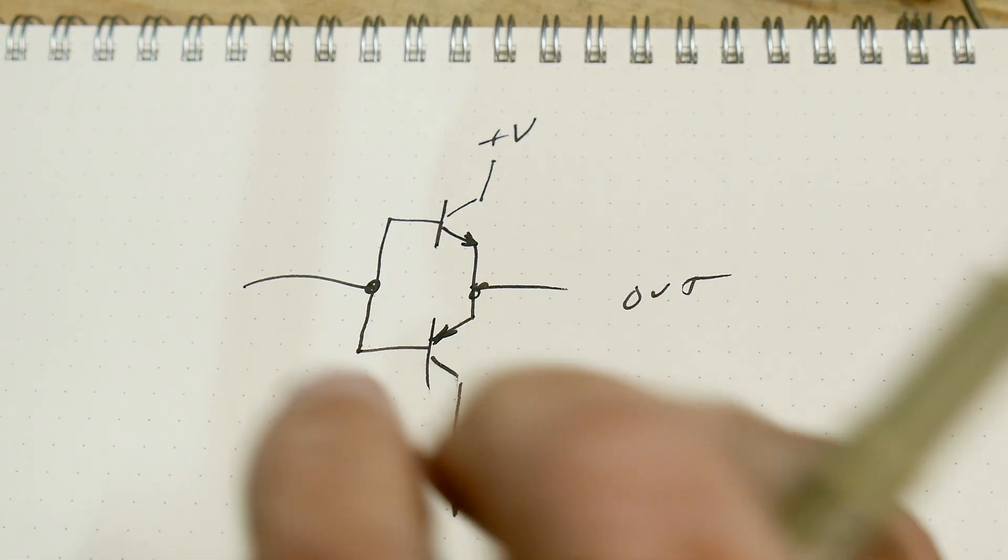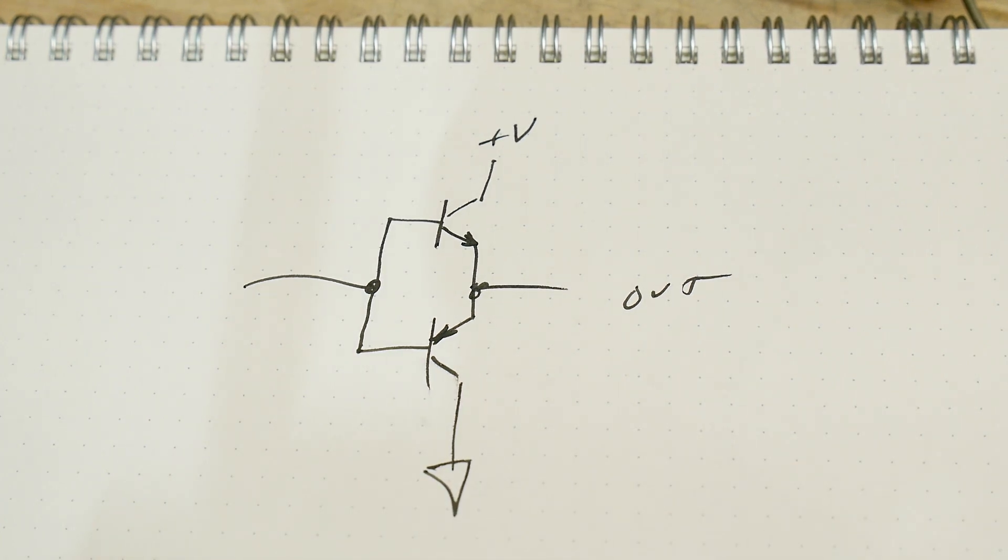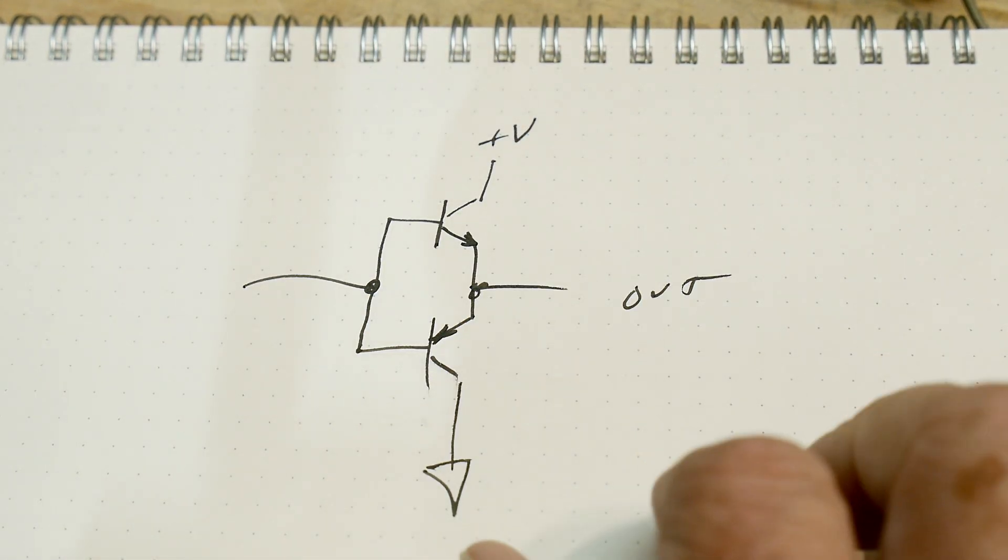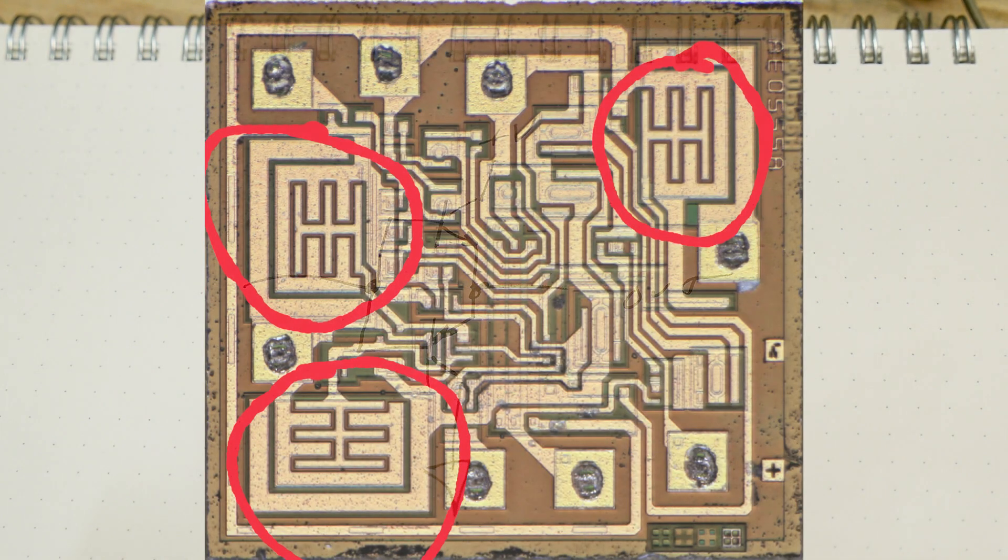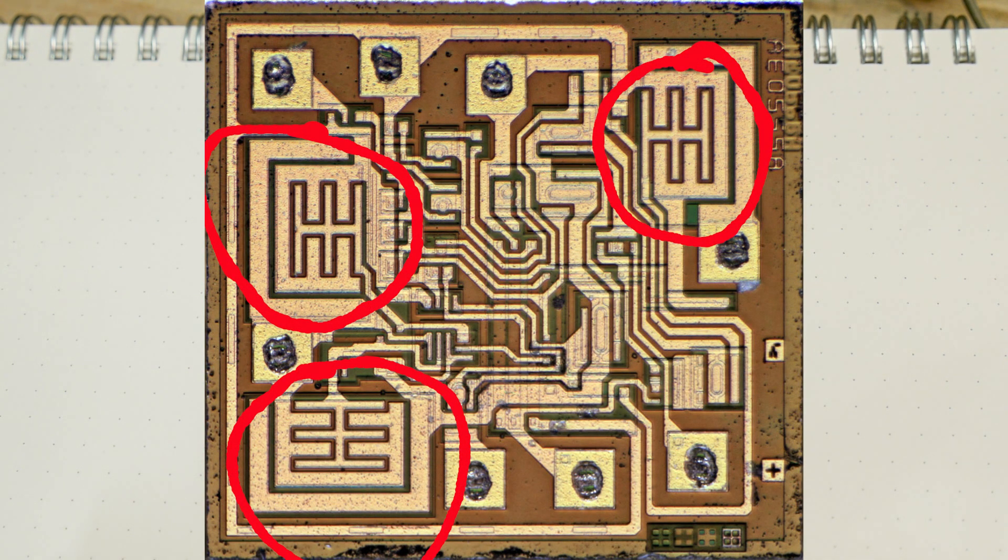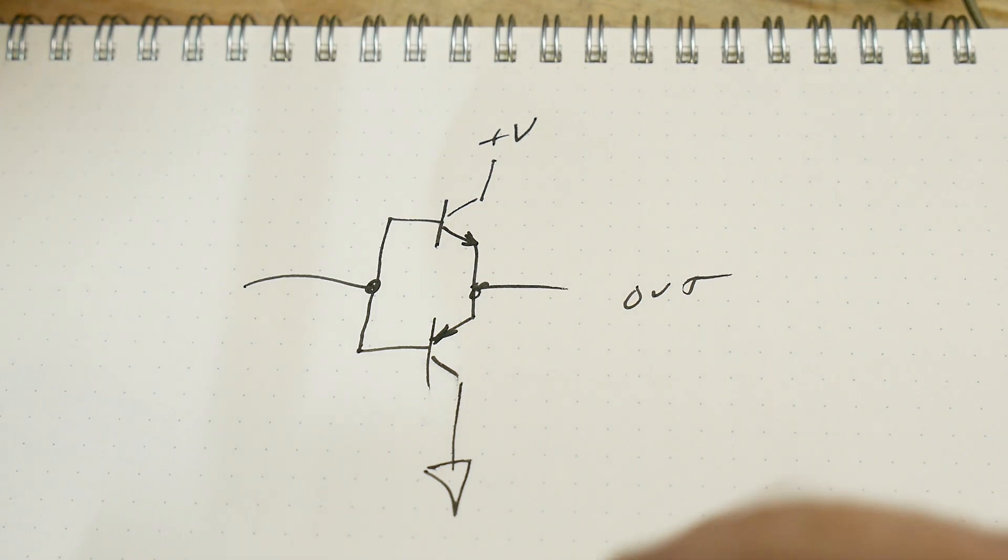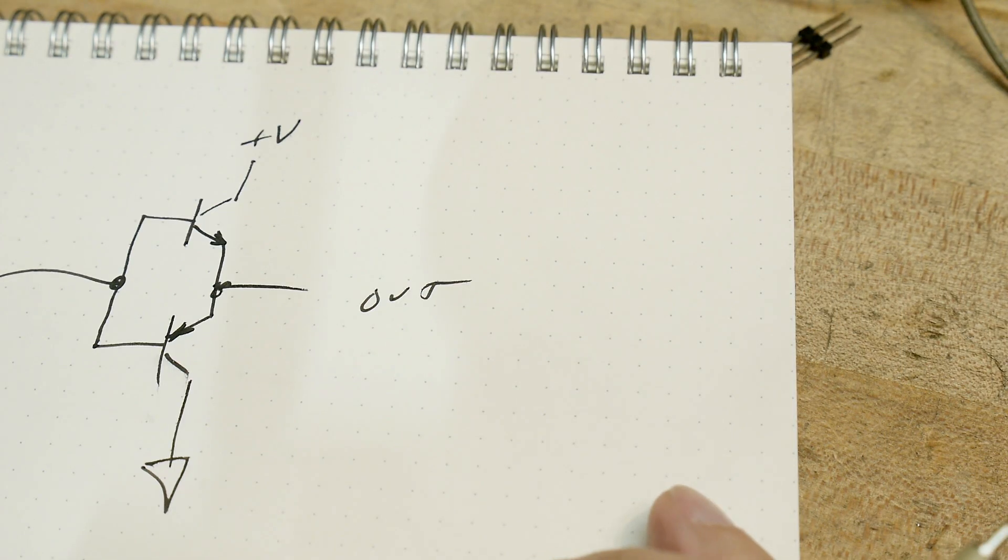We need three heavy duty transistors, all the rest can be kind of wimpy but you need three heavy duty ones. You can see here on the picture of the die there were three transistors that were all the same and those are the three that we have to deal with.